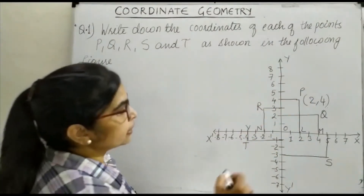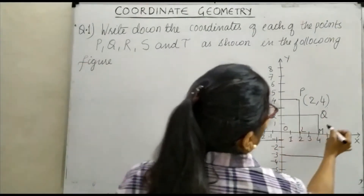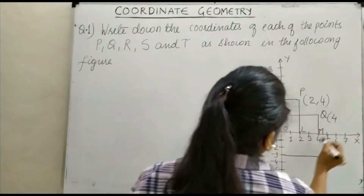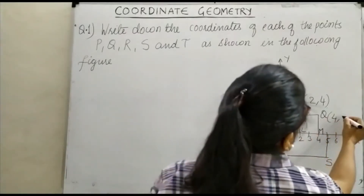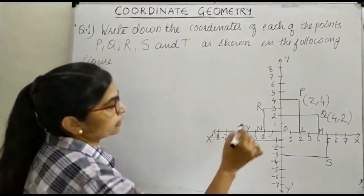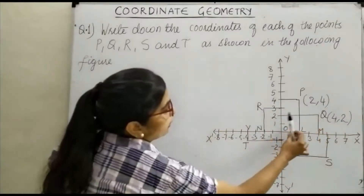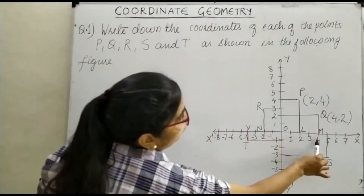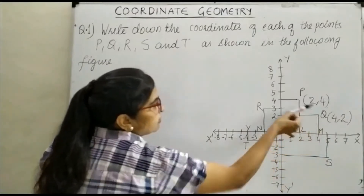Similarly, when you come to point Q, the x-coordinate is 4 and it is 2 units away from the x-axis.